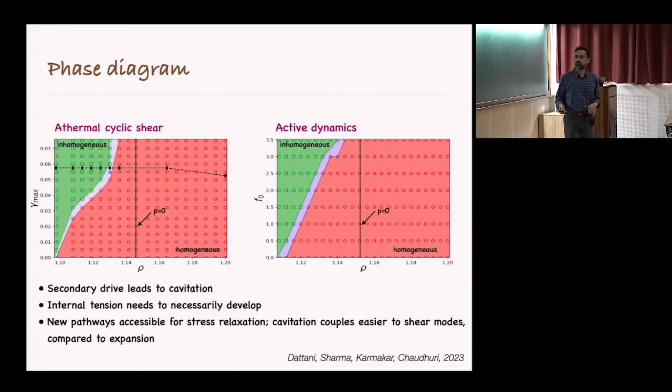This is the phase diagram that we have. The statement is that the secondary drive leads to earlier cavitation. Basically, this is the point at which a pure expansion process would cavitate, but as you add the secondary deformation, then depending upon the magnitude of the secondary deformation, which is the magnitude of the oscillatory shear or active dynamics, the cavitation will happen.